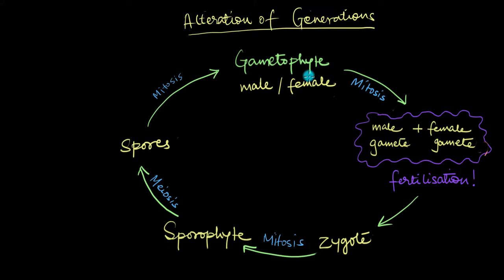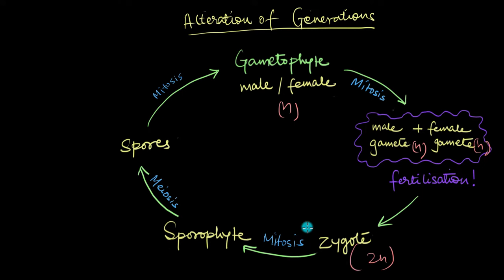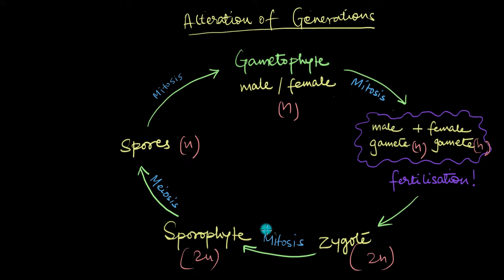The gametophyte is the stage where haploid gametes are formed by mitosis, meaning the gametophyte itself is also haploid. The male gametophyte produces male gametes and the female gametophyte produces female gametes. When these gametes fuse, they undergo fertilization to form a diploid zygote. This zygote undergoes several mitotic divisions to become the diploid sporophyte, which eventually produces spores via meiosis — meaning these spores are haploid. Each spore then gives rise to a new gametophyte via mitosis, and the cycle continues.